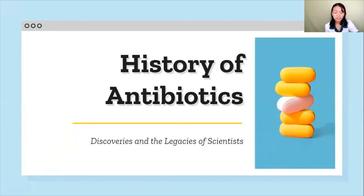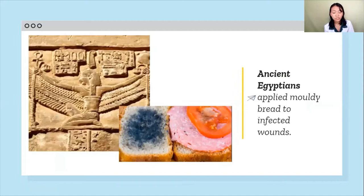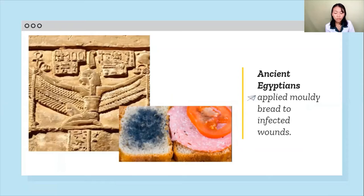Let's tackle the history of antibiotics, the discoveries, and some legacies of scientists. Antibiotics have been used for millennia to treat infections, although until the last century people did not know that infections were caused by bacteria. Various molds and plant extracts were used by early civilizations — the ancient Egyptians, for example, applied moldy bread to infected wounds. Until the 21st century, infections we now consider straightforward to treat, such as pneumonia and diarrhea caused by bacteria, were the number one cause of human death in the developed world.